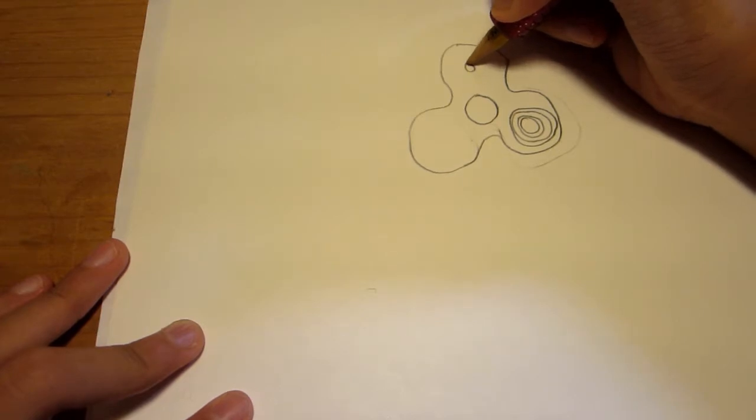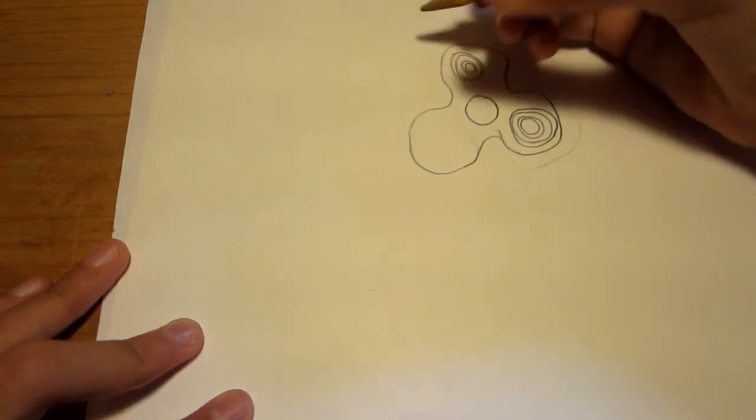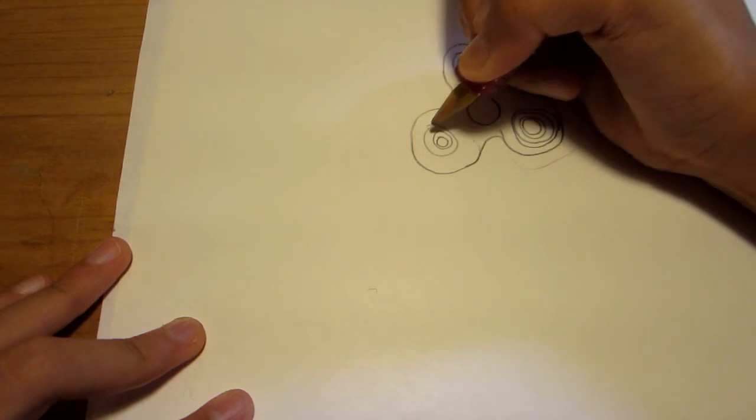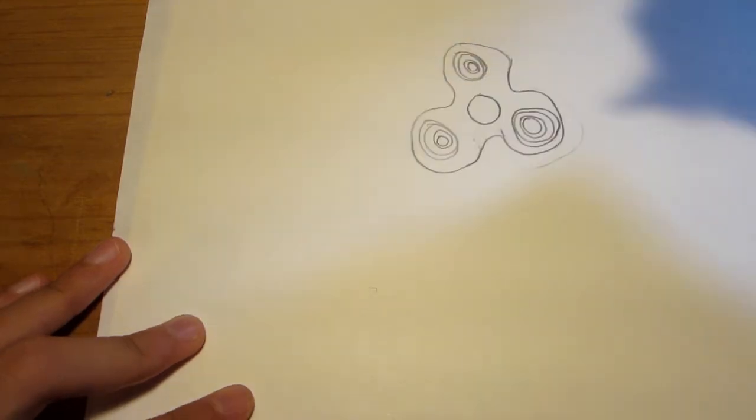Okay, so a small circle, slightly bigger circle, this one, and then here, here, here, here, and here. These circles are not even.